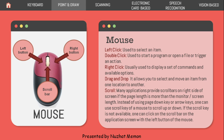Uses of mouse: Left click is used to select an item. Double click is used to start a program, open a file, or trigger an action. Right click usually displays a set of commands and available options. Drag and drop allows you to select and move an item from one location to another. Scroll — many applications provide scroll bars on the right side of the screen; when the page is longer than the monitor, you can use the mouse scroll wheel to scroll up or down conveniently.